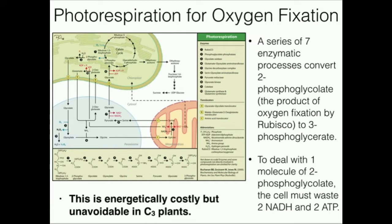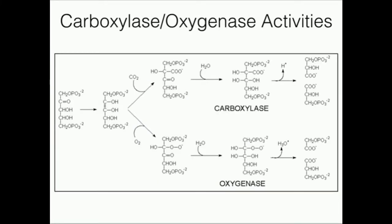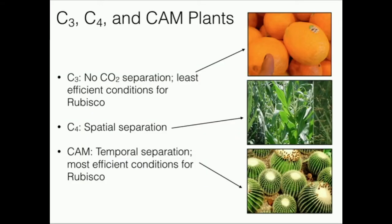For C3 plants, they don't have any way of separating carbon fixation from where the carbon is actually taken in. They don't have a way of separating that, so this photorespiration process really has to occur because 2-phosphoglycolate production can't be avoided. For C3 plants, there is no carbon dioxide separation — meaning there's no separation between the place in the cell where it intakes carbon dioxide and where it fixes carbon dioxide, because the place where it intakes CO2 is also the place where it intakes oxygen.